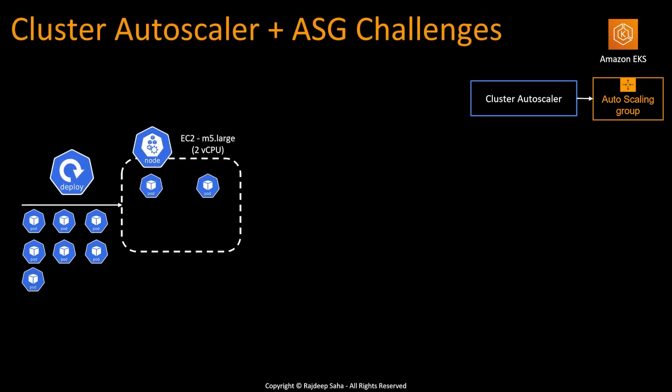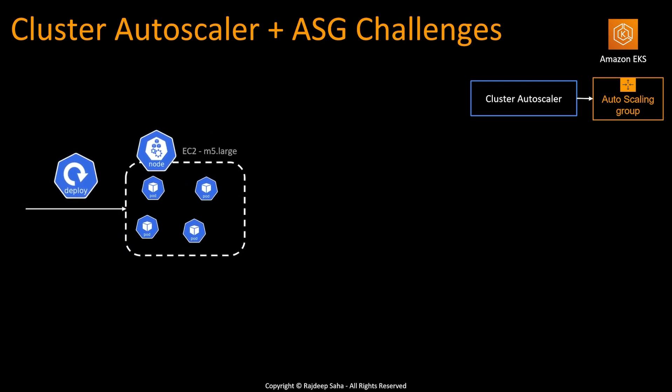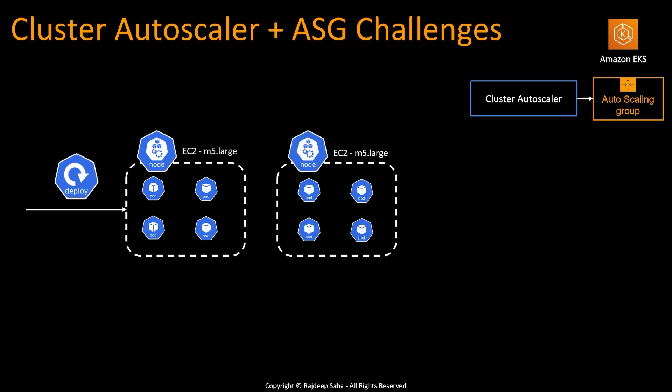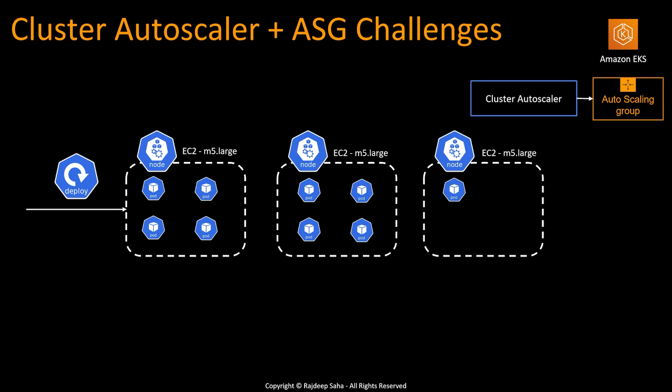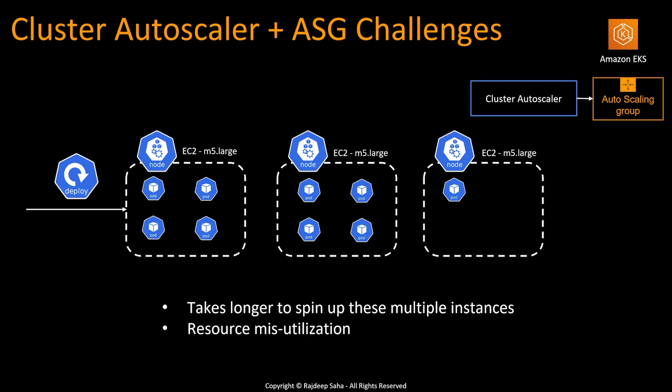In another scenario, we have the worker node with two pods and seven more pods to be scheduled. Two pods will schedule in this node, and then cluster autoscaler will keep on provisioning nodes. The last EC2 will end up with only one pod running.